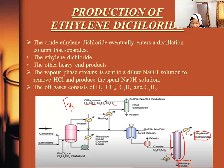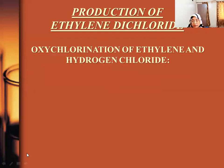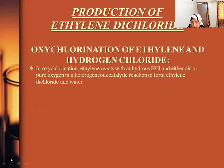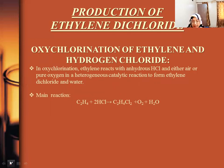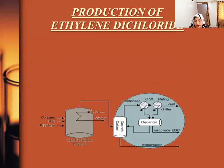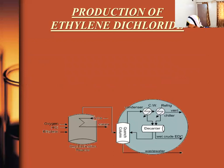Now we will look at oxychlorination of ethylene and hydrogen chloride. In the oxychlorination process, ethylene reacts with anhydrous HCl and either air or pure oxygen in a heterogeneous catalytic reaction to form ethylene dichloride and water. There are two techniques: the oxygen technique and the air technique.